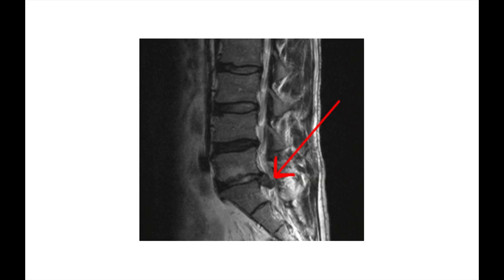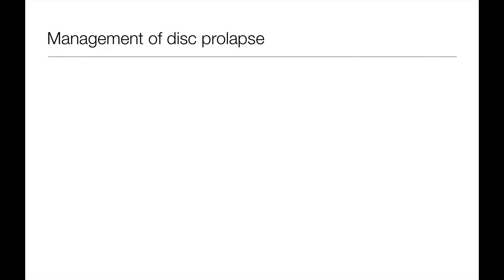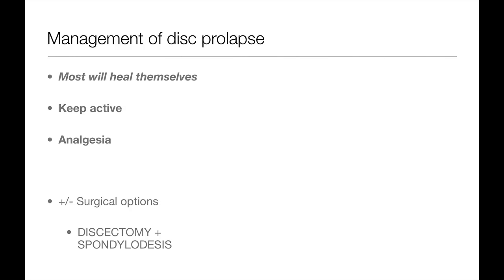Here is an example of an MRI that shows a disc prolapse. With time, disc prolapses usually heal themselves. Management should include intensive physiotherapy, keeping active in spite of pain, and taking adequate analgesia. If the problem reoccurs very often or doesn't seem to be healing by itself, you could try a surgical option such as removing the herniated disc — doing a discectomy and then fusing the vertebrae either side of it, which is known as spondylodesis.